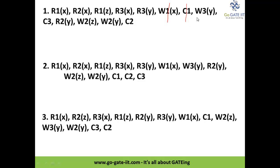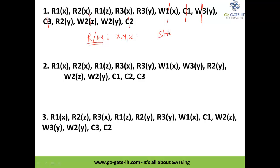Similarly, we check the remaining data items. For y, we have W3y, and the very next instruction is C3 — completed with no operations in between. For z, we have W2z, and it completes with no operations in between. Note that the W2 on y is a separate operation. Since there are no read or write operations performed on data items x, y, or z between first update and completion, we can directly say this is a strict schedule.